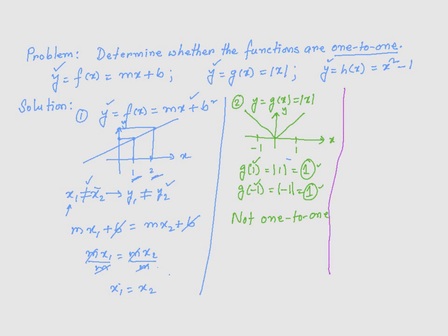Now, let's do the third one, which is y equals h(x) equals x squared minus 1. Now, we are going to play the same kind of trick. So, let's say we have two x values, x equals 2, and x equals negative 2.